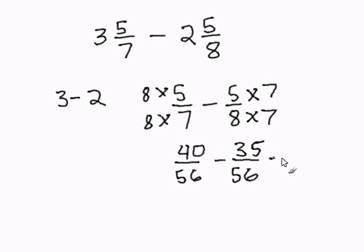Now we subtract the fraction. Our denominator remains the same. 40 subtract 35 is 5. 5 over 56 cannot be reduced.